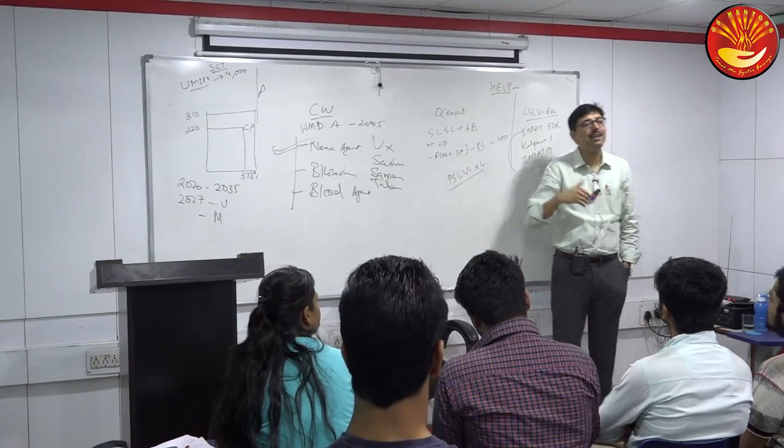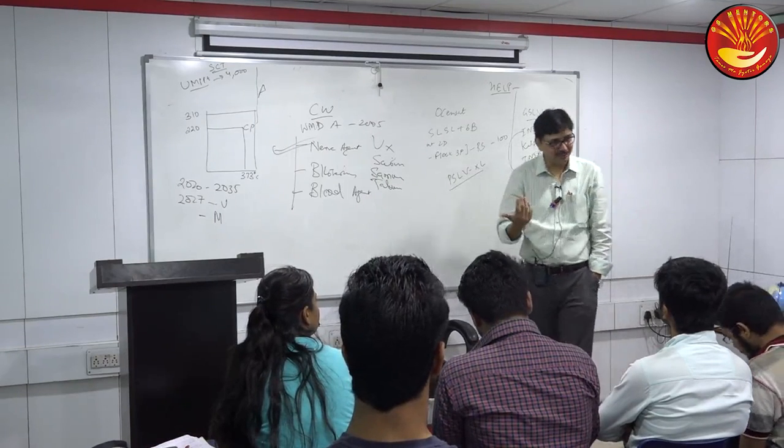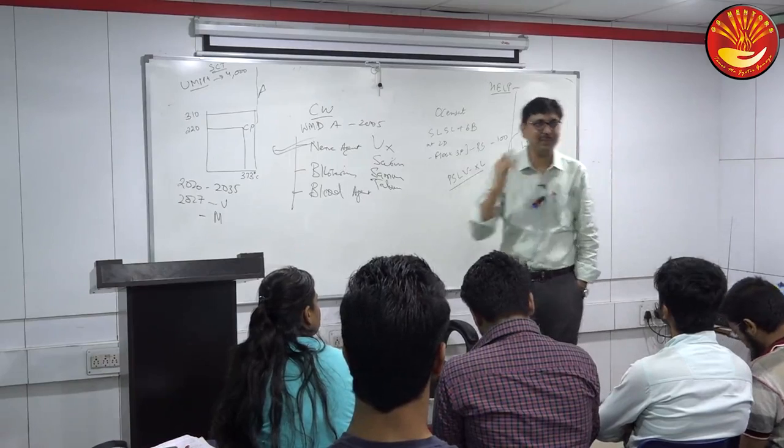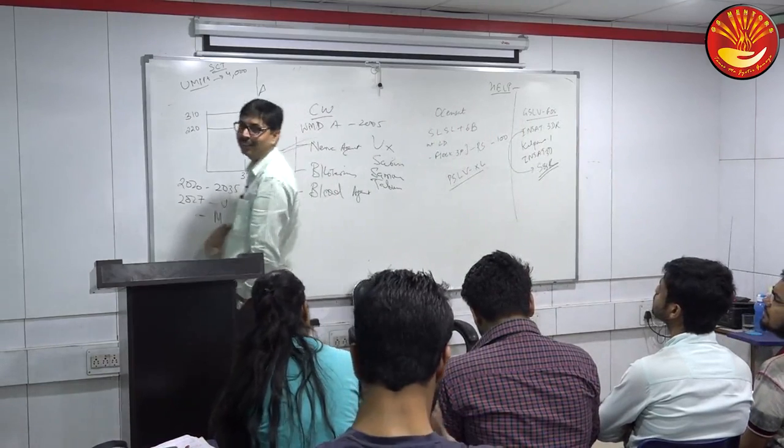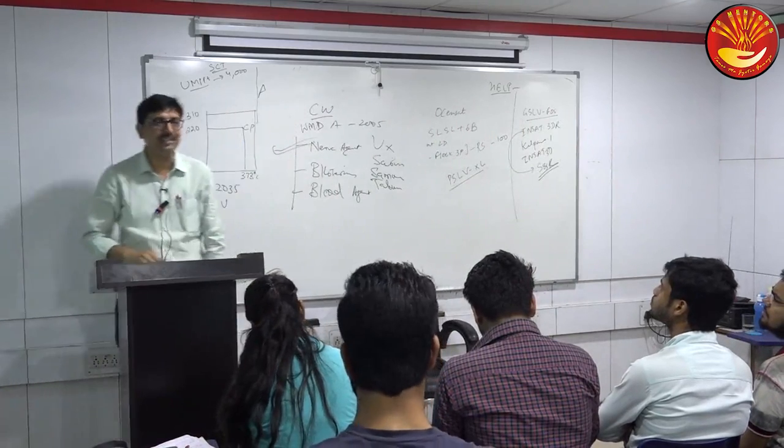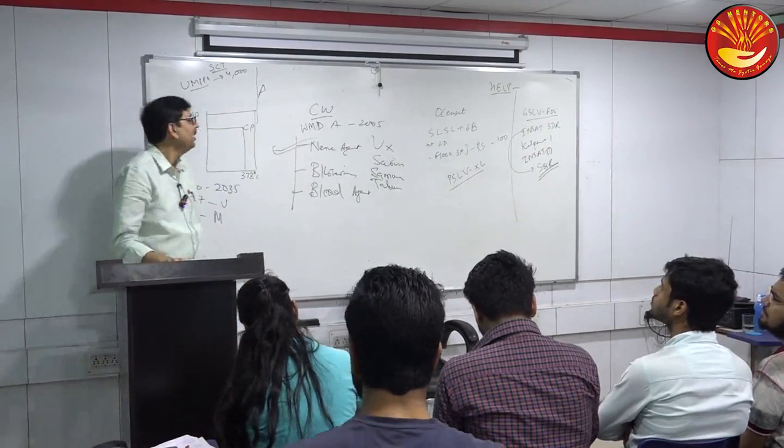These are the three classes of chemical weapons — nerve agents, blistering agents, and blood agents. There is also the Chemical Weapons Convention, which had a question last year. This year, questions on these specific agents are likely to appear.